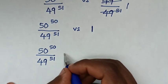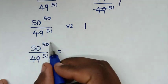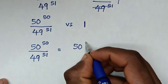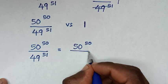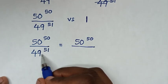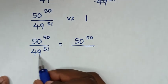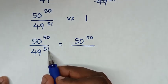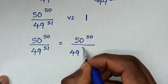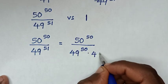This equals, in the numerator, 50 power 50 over — we make this power have a common power of 50 — so 49 power 51 is the same as 49 power 50 times 49 power 1, since power of 1 plus power of 50 is power 51.